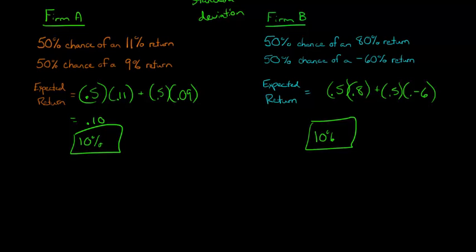So for firm A, we would just take, and remember we've got these two outcomes here, so we'd say the variance is going to be equal to 0.5 times 0.11, that's that 11% return, minus the expected return of 0.10. You can think of that as the mean. And then we're going to add in here, plus 0.5 times 0.09, minus the expected return of 0.10, and then we'll square that.